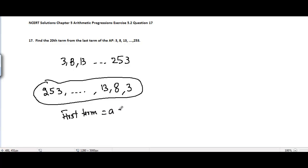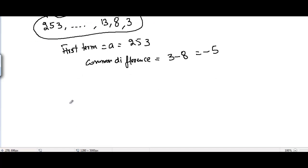For example, the first term of this AP is equal to a is equal to 253, and the common difference of this AP is equal to the difference between any two consecutive terms. For example, it's 3 minus 8, which is equal to minus 5.